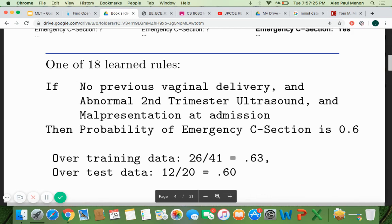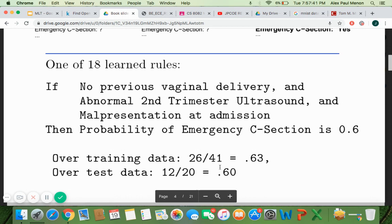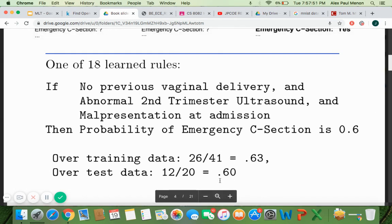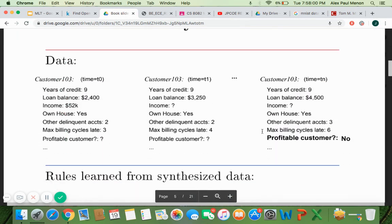So one simple rule could be if there is no previous vaginal delivery and abnormal second trimester ultrasound and malpresentation admission, then probability of emergency c-section is 60%. So this is one way of understanding what is the probability that that particular patient or new patient who is having these problems can lead to 60% possibility that that person can have a cesarean. So from that particular data itself, we can understand that if 60% is the probability, then probably 40% is there is no chance of cesarean and there is normal. So there itself, we can understand the probability better.